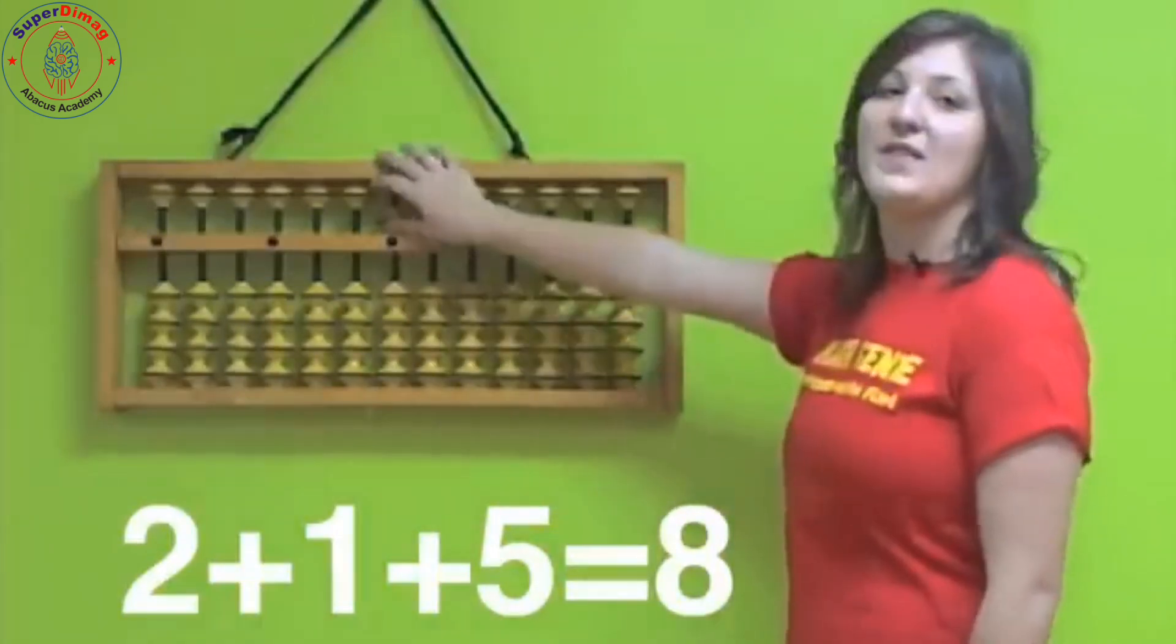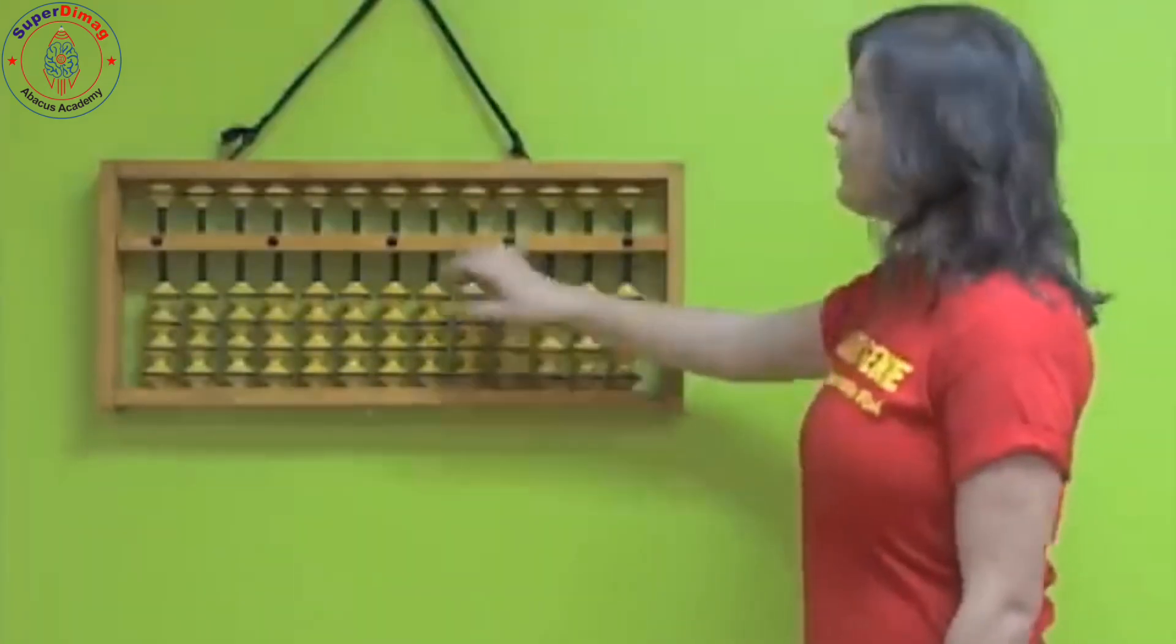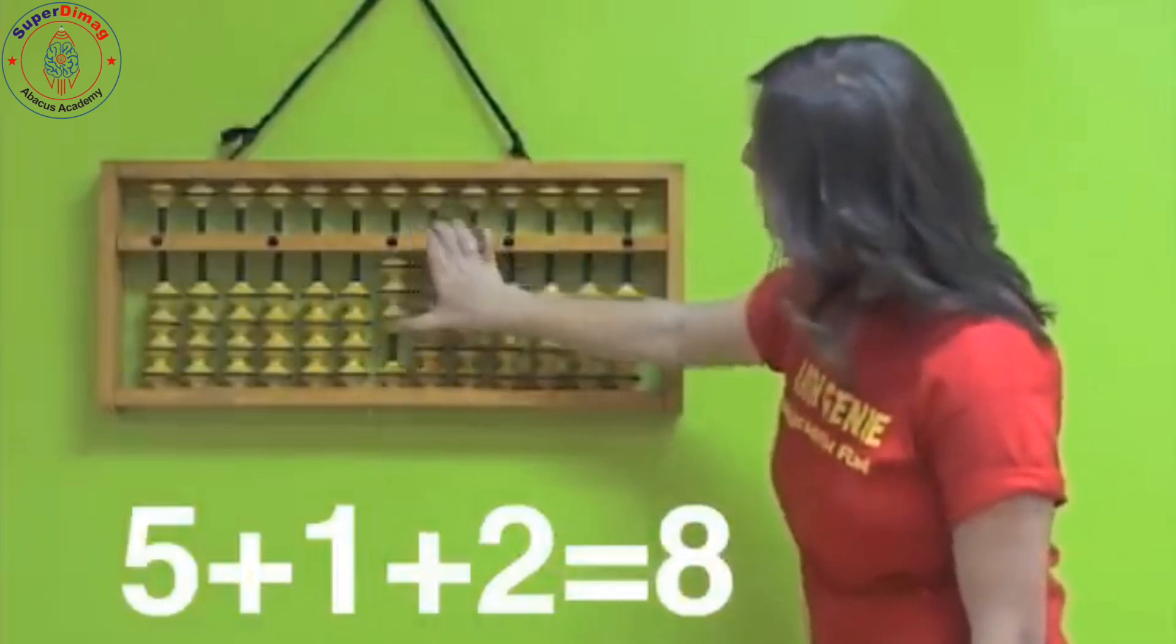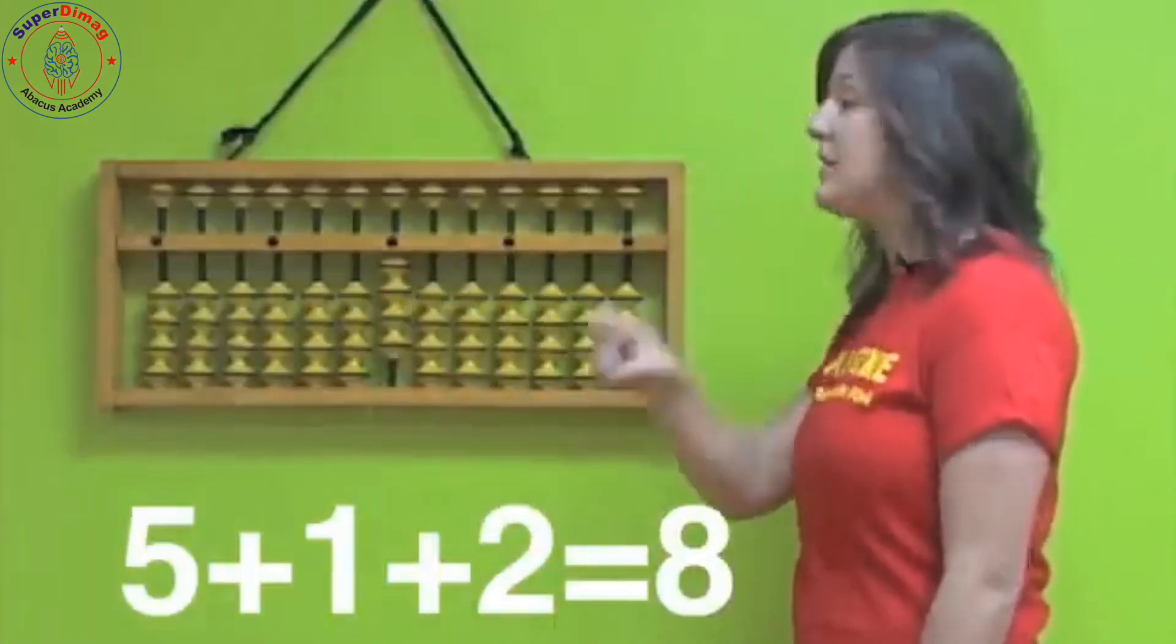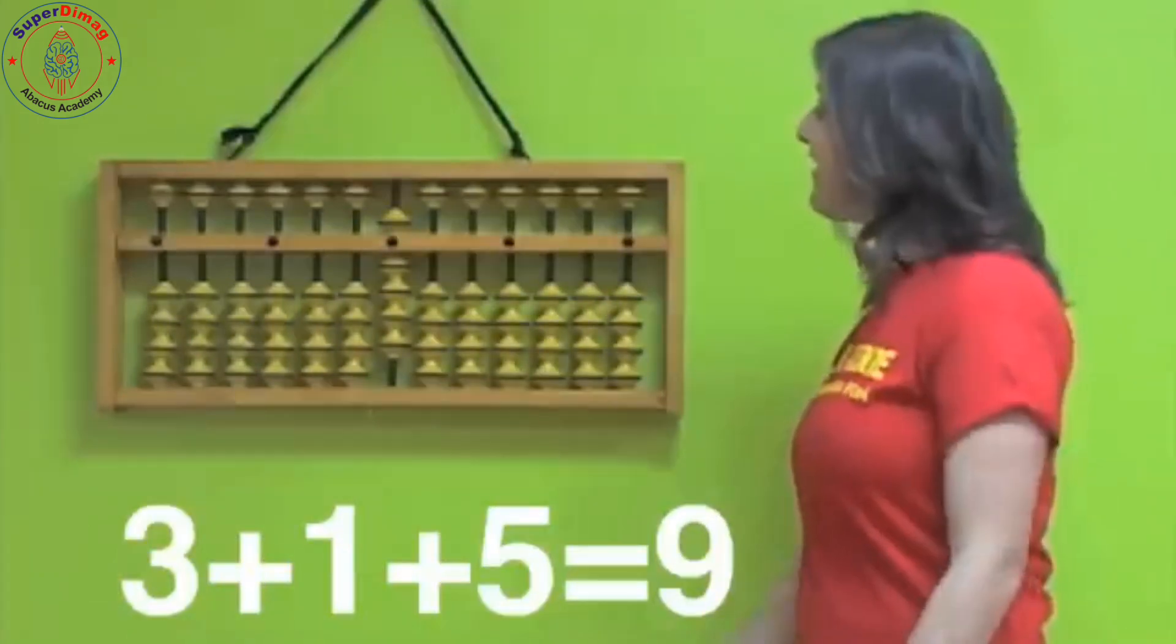Now try some of these with me. We're going to clear our abacus and we're going to try these. Three, add one, add five. Let's see. Three, add one more, and then add five with your pointer. Answer is nine. Very good.